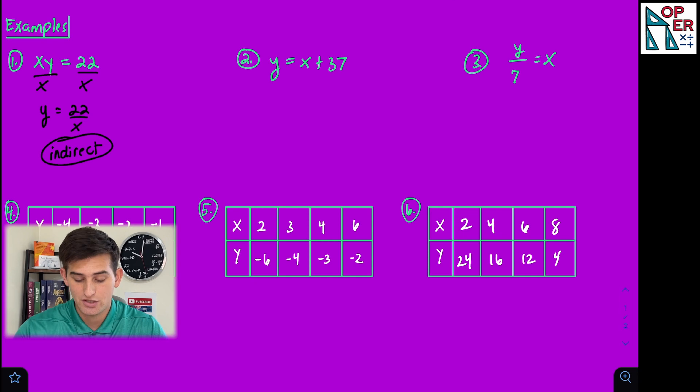Notice on number two, we have addition involved, x plus 37. So this is neither indirect nor direct.